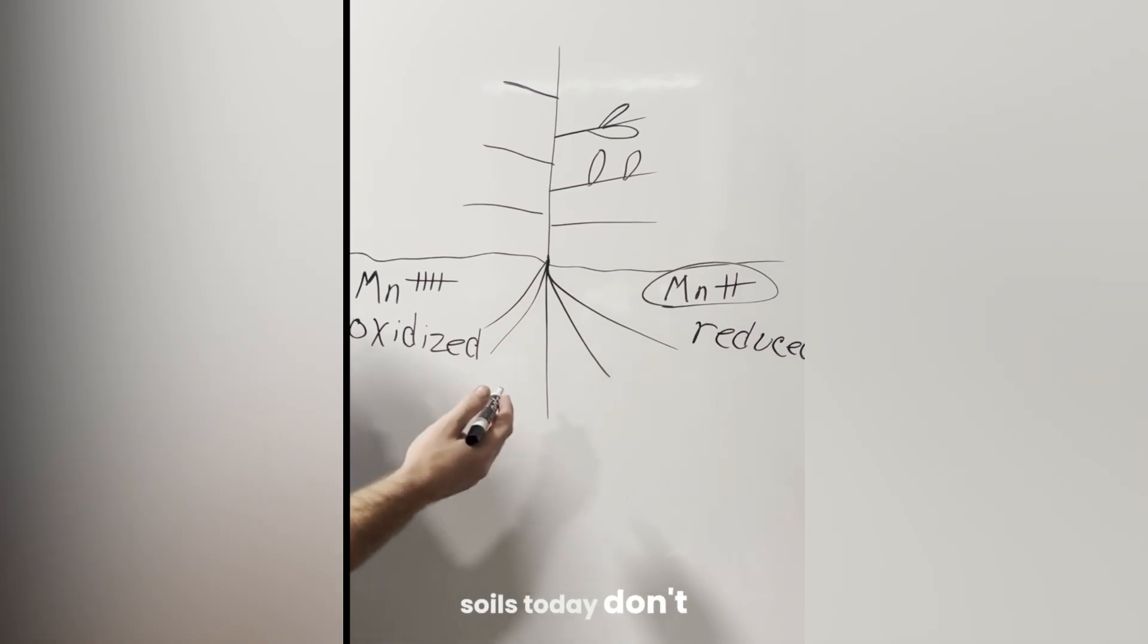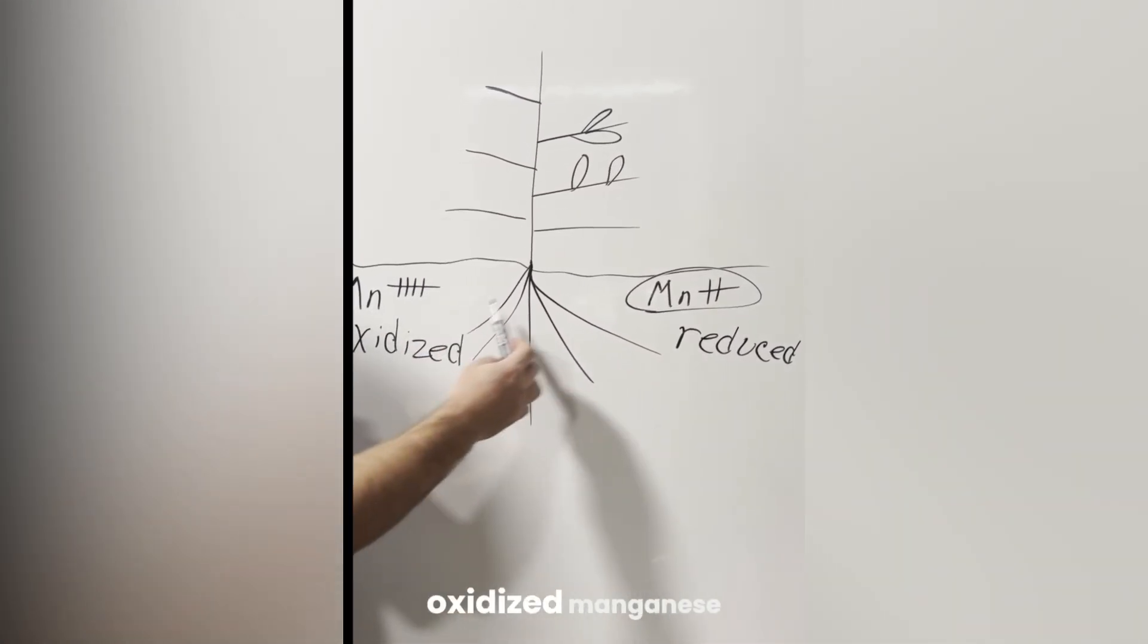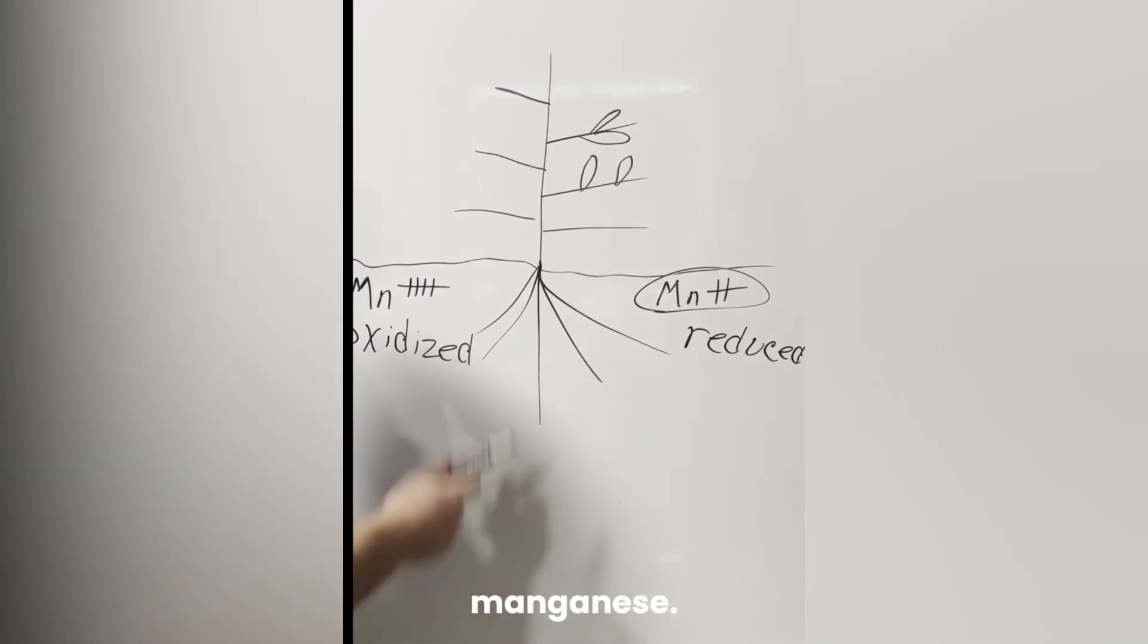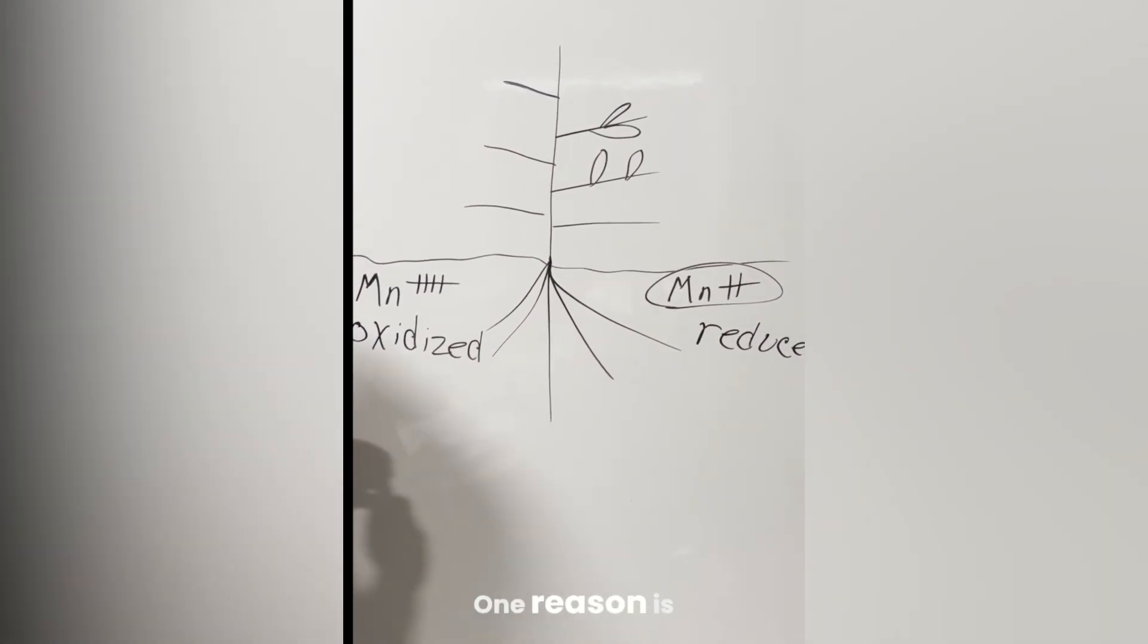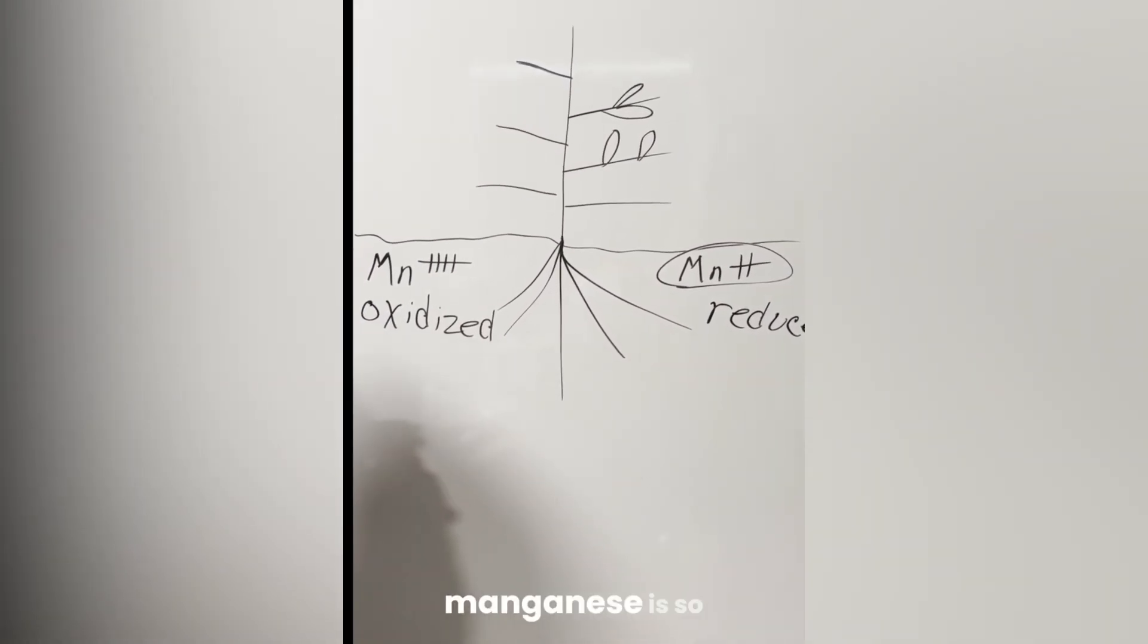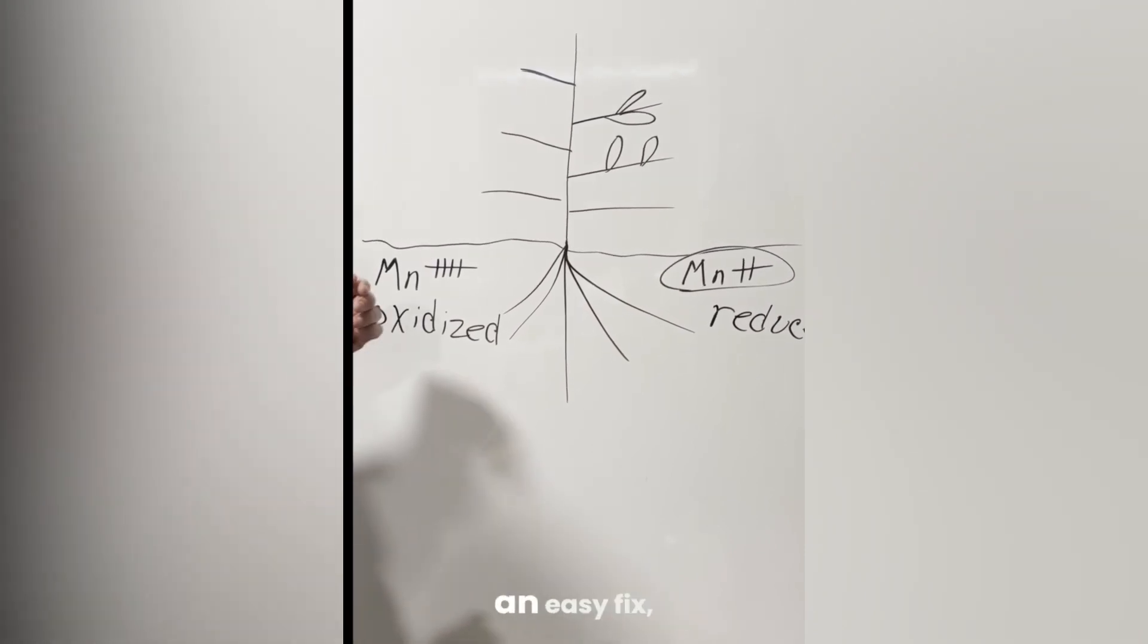And many of our soils today don't have the vigorous biology that is needed to convert oxidized manganese to reduced manganese. Now the reason this gets interesting, and the reason I'm talking about manganese, there's two reasons. One reason is manganese is so universally deficient on sap analysis and on tissue analysis. It's an opportunity for an easy fix